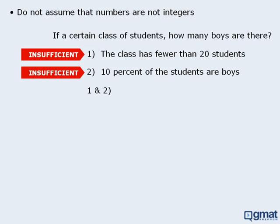Now, if we combine the two statements, we know that the total number of students is less than 20, and we know that 10% of the students are boys. At this point, we might conclude that since we still do not know the total number of students, there is no way to determine the number of boys, and so the combined statements are not sufficient and the answer is E. This answer, however, is incorrect.